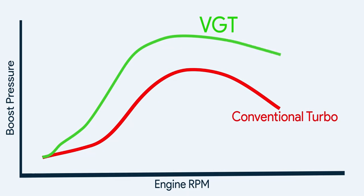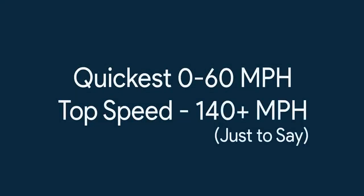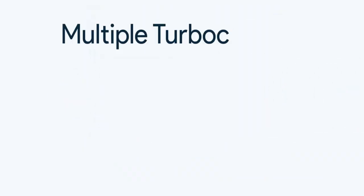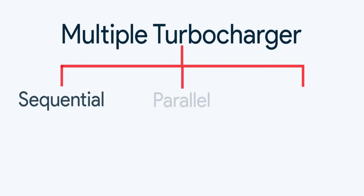But if you want quick acceleration — say 0 to 60 — and also want top speed above 140 mph, then VGT is just not perfect. For that, there is twin turbo, also called bi-turbo. There are three types of using multiple turbochargers: sequential, parallel, and series.